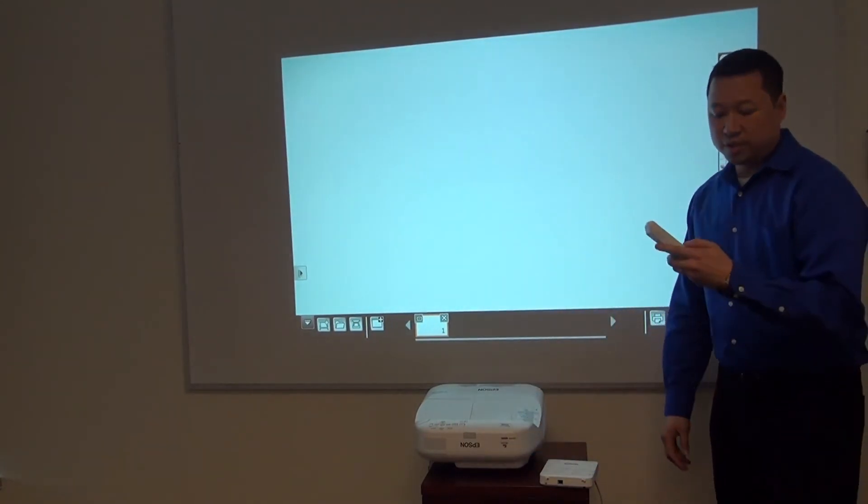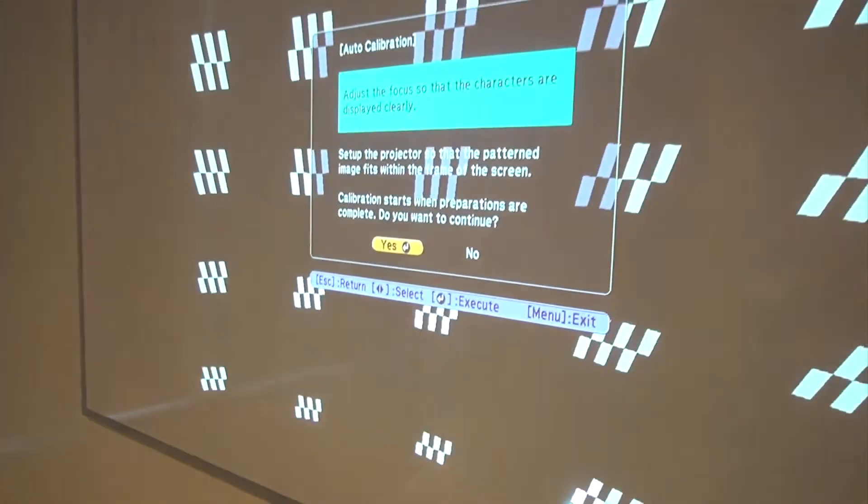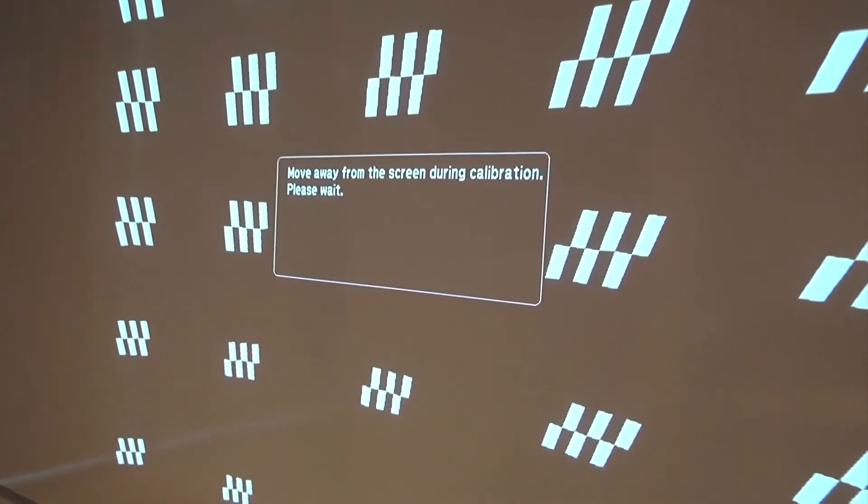And then on the remote control, you're going to hit the user button, which auto-calibrates the interactivity. You need to step away from the screen at this point.